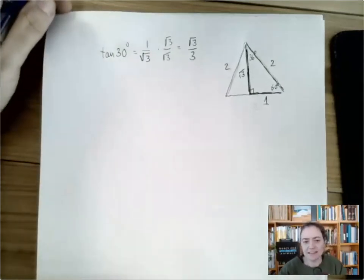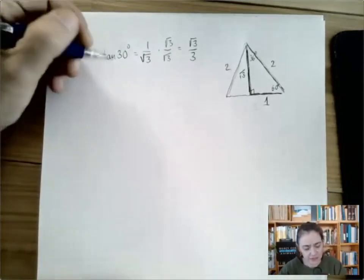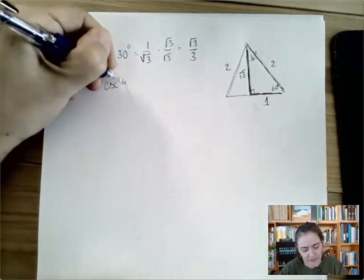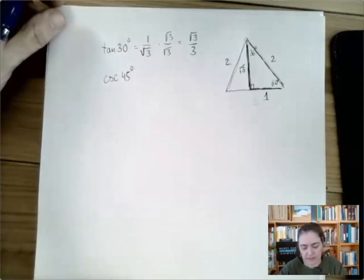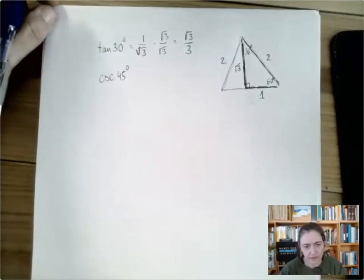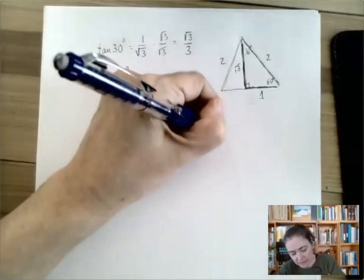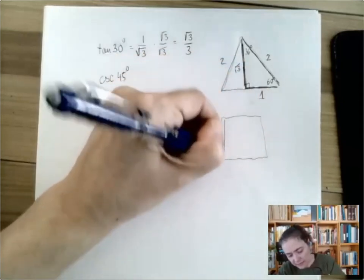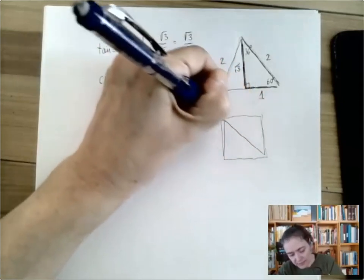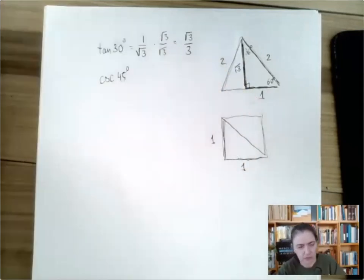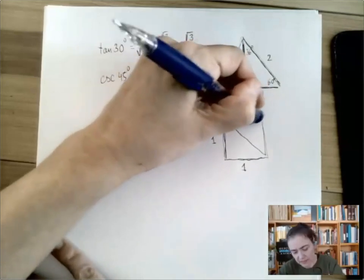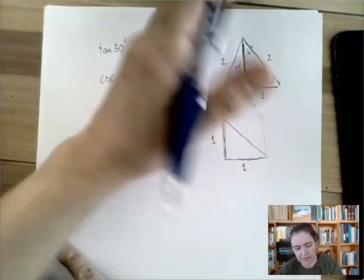The next question is cosecant 45. For anything of 45 degrees, I would go for the isosceles right triangle. We can think of that as half of a unit square chopped off by this diagonal.